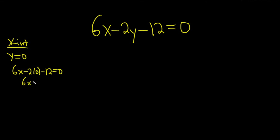So this is 6x, this is just zero minus 12 equals zero. Add 12 to both sides, plus 12 plus 12, so you get 6x equals 12. Divide by 6, divide by 6, you get x equals 2.